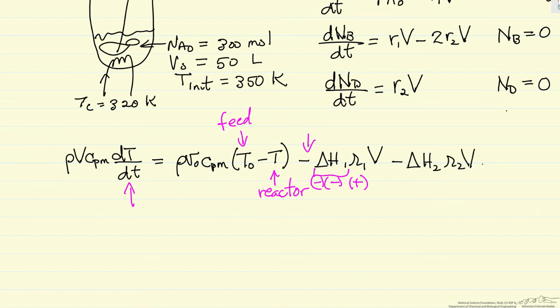And then the last term is the heat transfer coefficient times the heat transfer area. Let's call it a cooling temperature, it could be a heating temperature, it depends on the conditions. So this is our value of 320 Kelvin. This of course is the same reactor temperature.